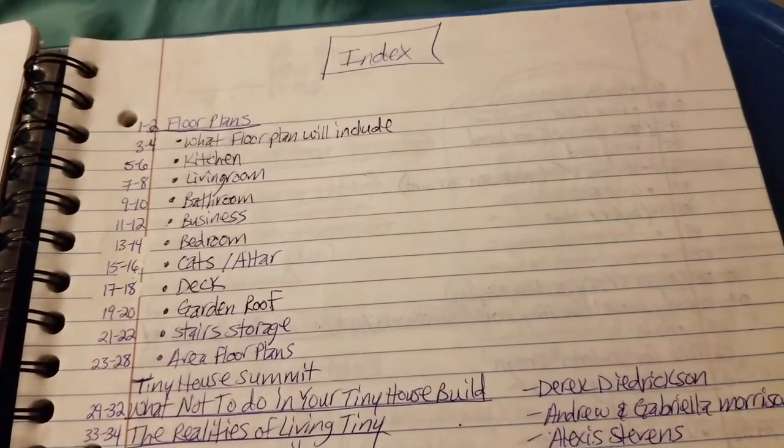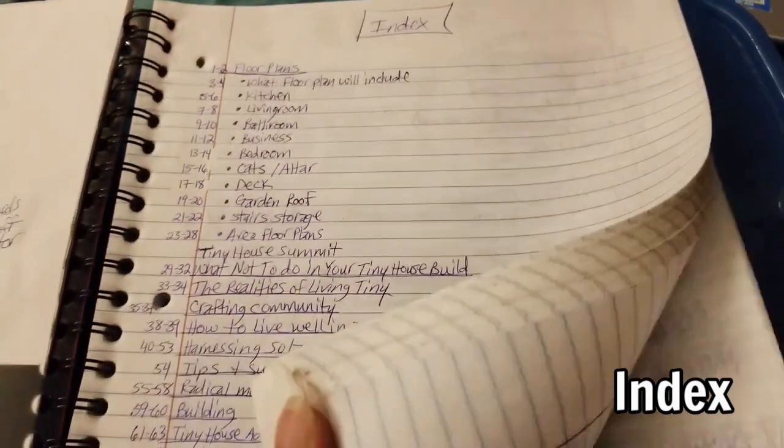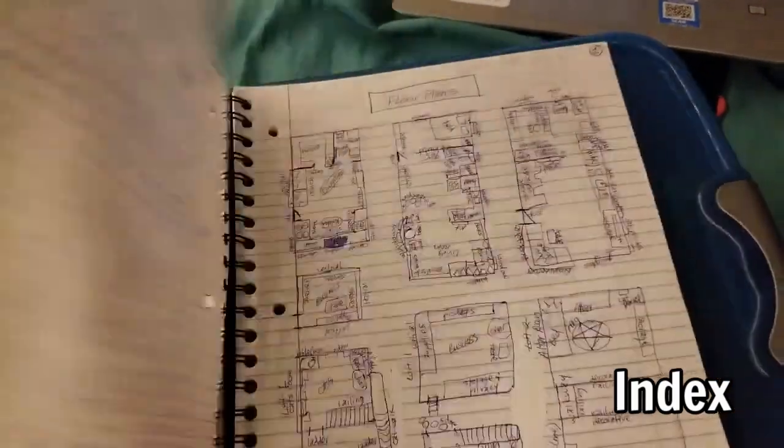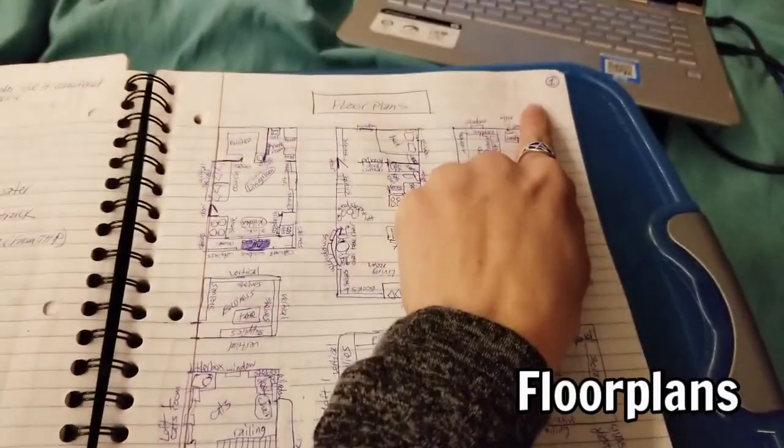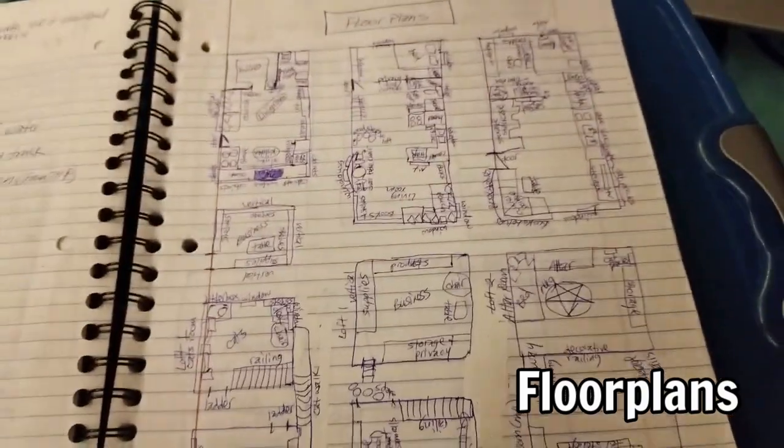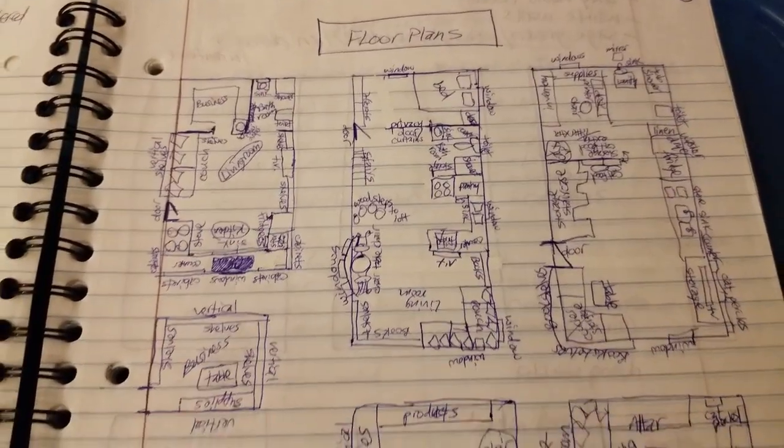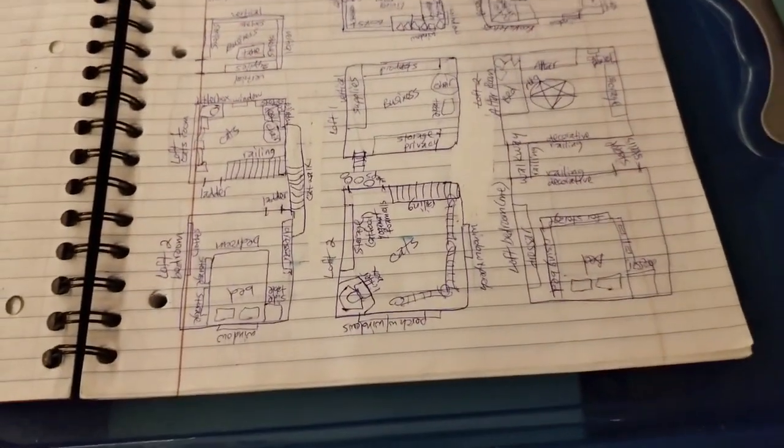I started with an index. On each of these pages, that's when all of these numbers would go in. Let's start here - floor plans. So this is page one. I made like three top and bottom floors. My house doesn't look anything like any of these, so things do change.